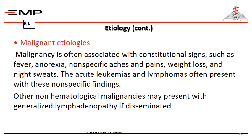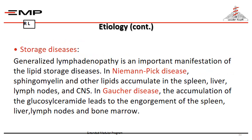There is also a malignant etiology, in which the malignancy is present either in the lymph node itself as a hematological malignancy, or as metastasis from a malignancy elsewhere. Malignancy is often associated with constitutional signs such as fever, anorexia, nonspecific aches, weight loss, and night sweats. Acute leukemias and lymphomas often present with these nonspecific findings.